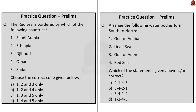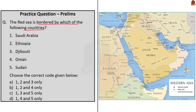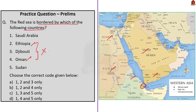Two questions are now framed about water bodies in Western Asia. The first question asks which countries border the Red Sea. The Red Sea is bordered by four African nations on the west — Egypt, Sudan, Eritrea, and Djibouti — and two Asian countries on the east — Saudi Arabia and Yemen. Oman and Ethiopia do not share a border with the Red Sea. The correct answer is option C — 1, 3 and 5 only.